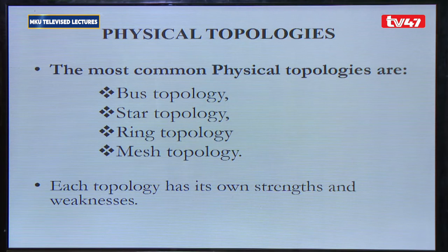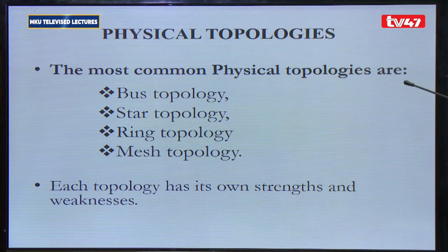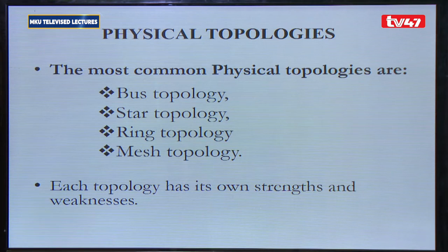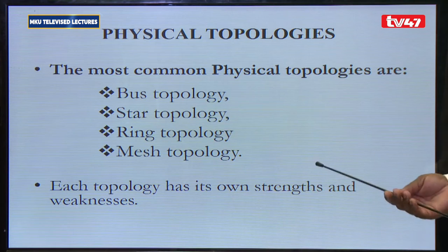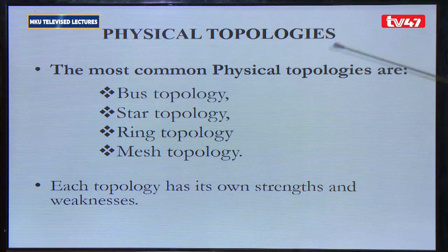When you're setting up a network, the choice of a particular network topology determines the way communication will take place within that network structure. Physical network topologies refer to the physical layout of the network, which determines how the connections are done among the computers and where the computers are placed. There are quite a number of physical network topologies: bus topology, star topology, ring topology, mesh topology, and hybrid topology. The hybrid topology is a combination of more than one of these topologies.